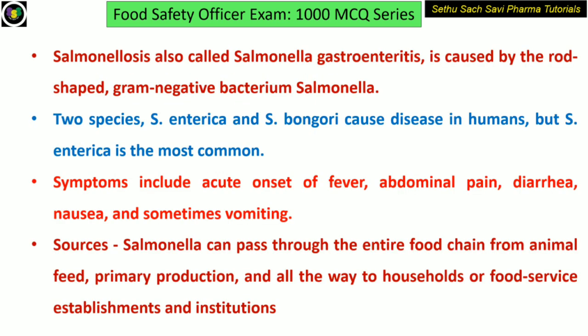Salmonellosis is also known as Salmonella gastroenteritis. It is caused by the rod-shaped gram-negative bacterium Salmonella. There are two species of Salmonella: Salmonella enterica and Salmonella bongori. Both these species can cause disease in humans and the most common one is Salmonella enterica. Let us see the symptoms.